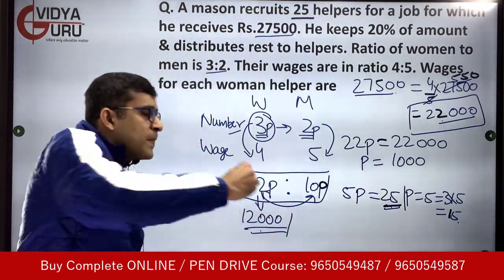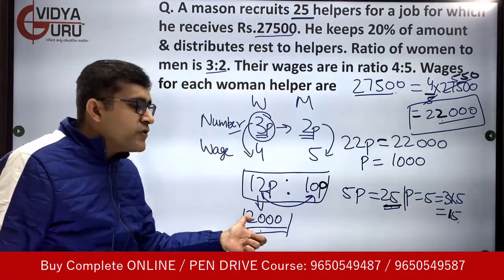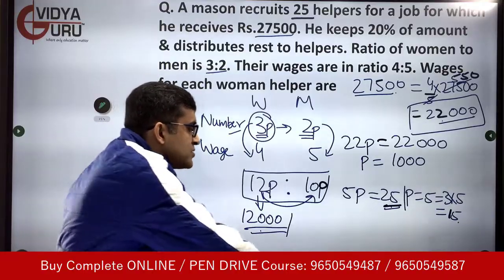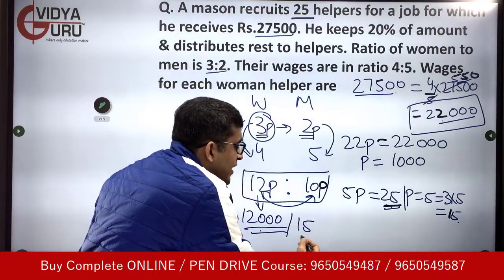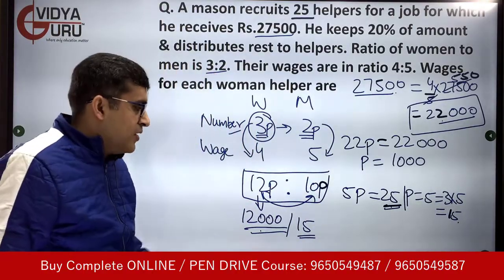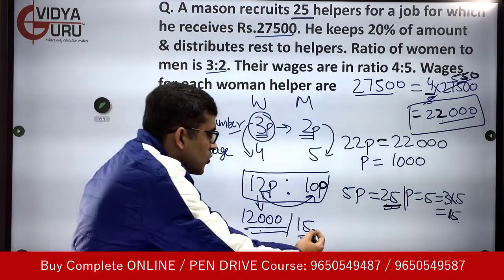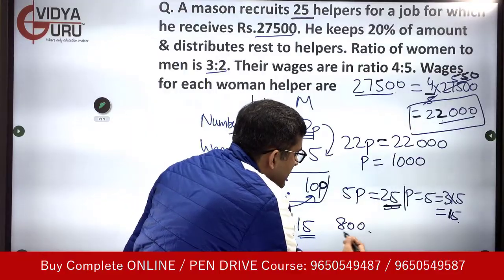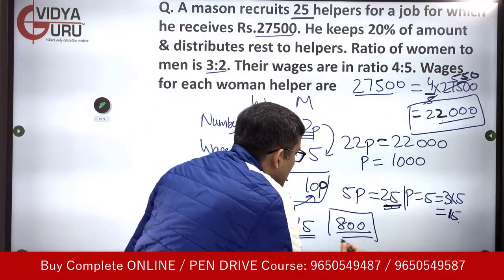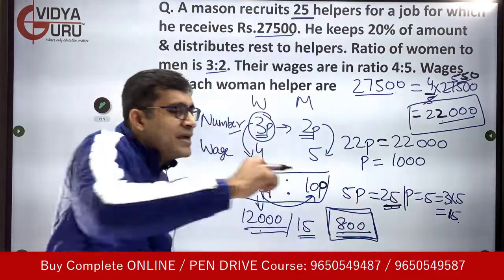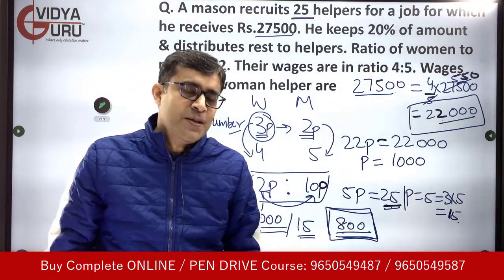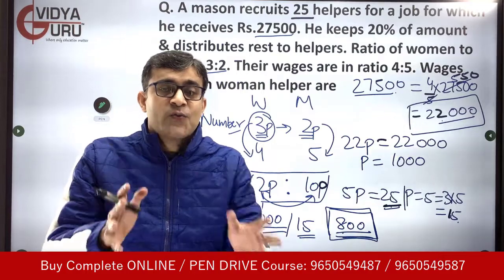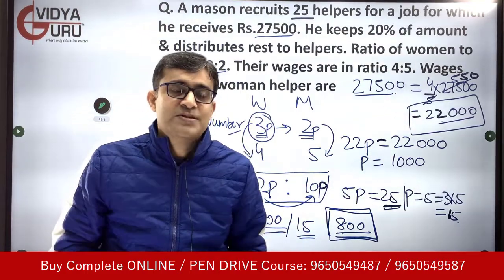Total money paid to all women is Rs. 12,000. So each woman gets 12,000 divided by 15, which turns out to be Rs. 800. Rs. 800 is being paid to each woman helper. If you liked our video, please press the like button and don't forget to share it with your friends. God bless all of you.